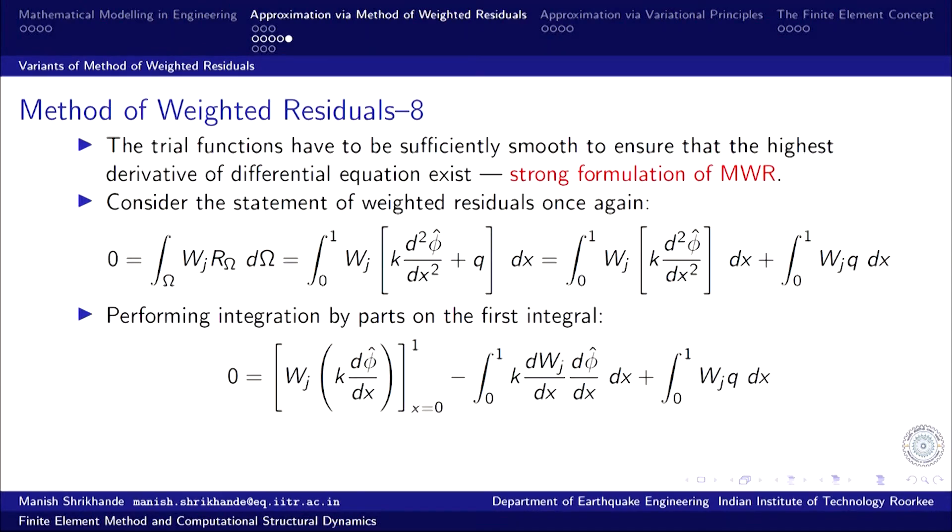Hello friends. In our last lecture we discussed about the weak form of the method of weighted residuals — how it allows us to reduce the continuity requirement on the approximate solution by transferring the derivative onto the weighting function.